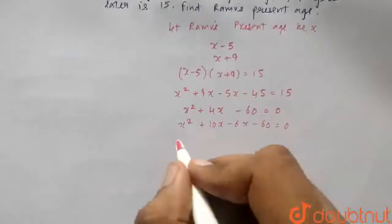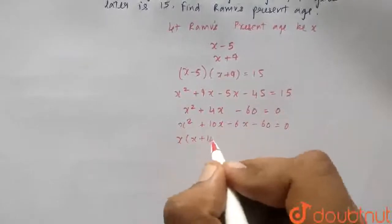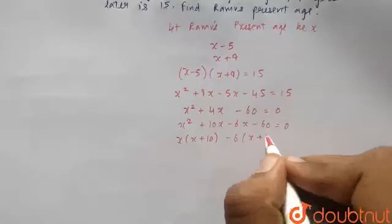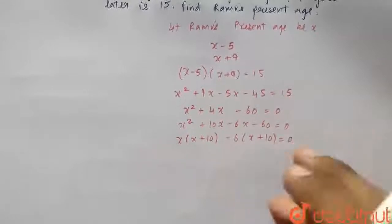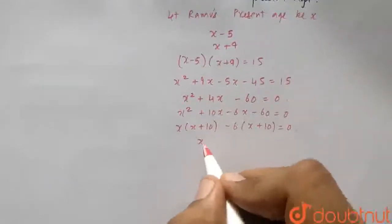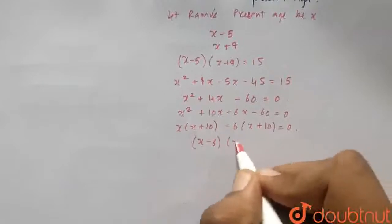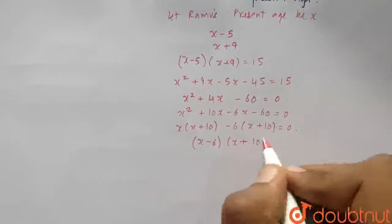Taking x common, x into (x + 10), minus 6 into (x + 10), which equals 0. Therefore, we have (x - 6)(x + 10) = 0.